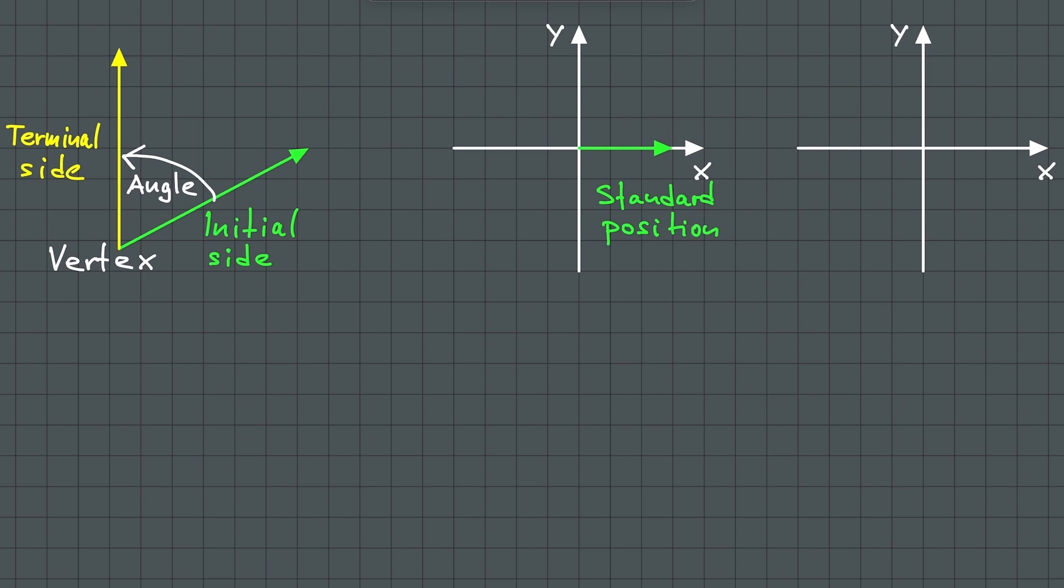When an angle alpha is in standard position, the terminal side will either lie in a quadrant in which case we say that alpha lies in that quadrant, or the terminal side will lie on the x-axis or on the y-axis, in which case we say that alpha is a quadrant angle.